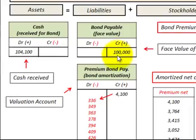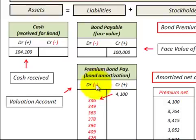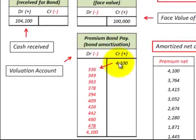Our goal is to get this liability down to $100,000 at the maturity date of the bond, and we do that through this valuation account. This valuation account works similar to a contra account — the only difference is that debits and credits have the same meaning: a debit minus in bonds payable corresponds to a debit minus in the premium, and a credit plus in bonds payable is also a credit plus on the premium on bonds payable.